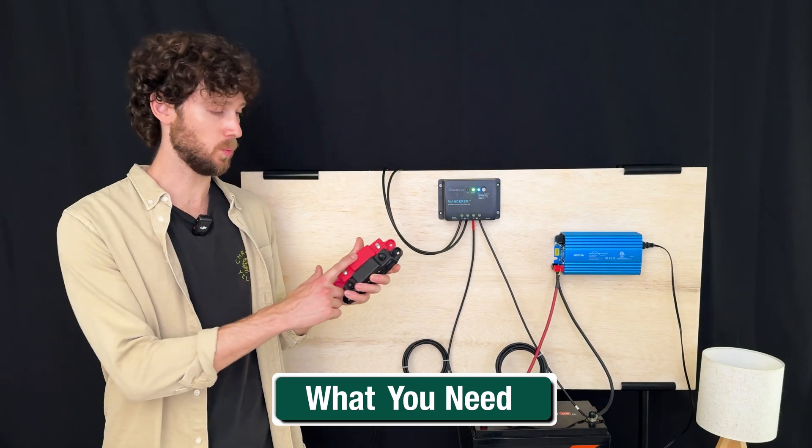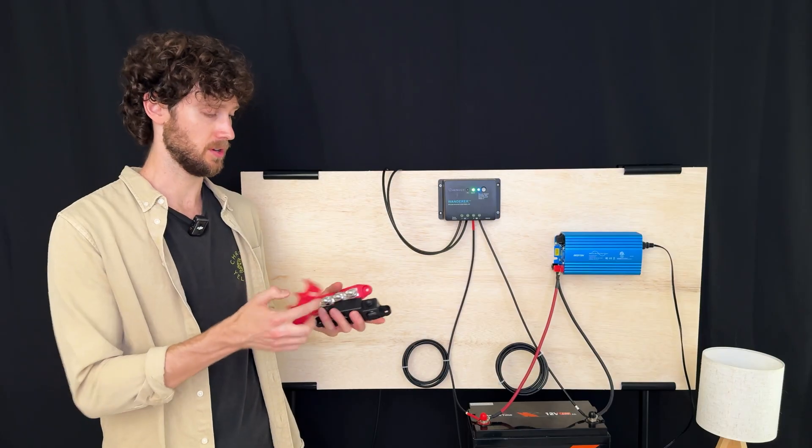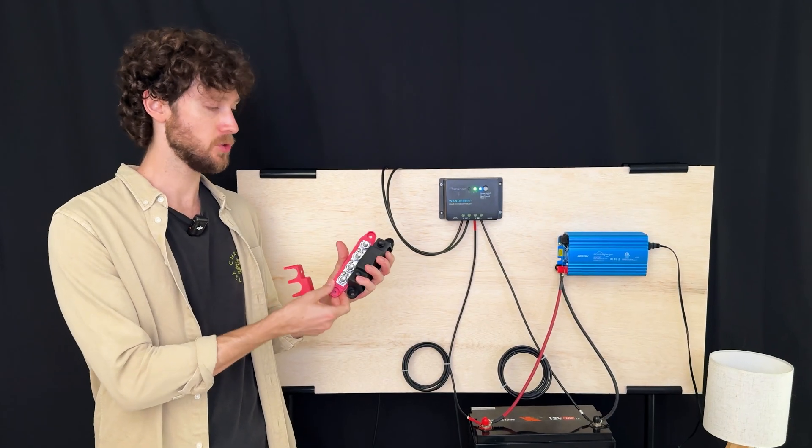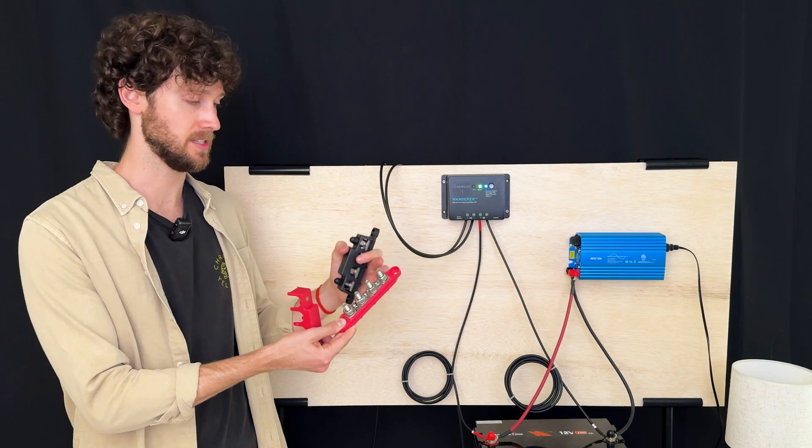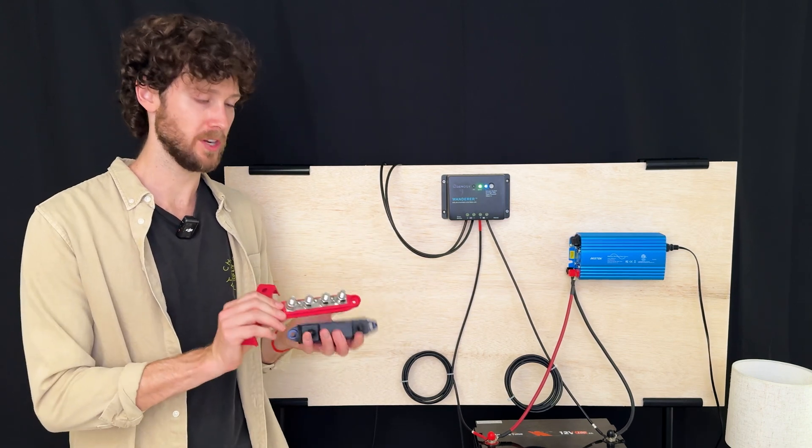You'll need two bus bars, ideally one red and one black. And these have four posts, which are also called studs. You can get a larger one if you want, so you can connect even more devices. You can get six, eight, ten, twelve, whatever you want. And when you're picking bus bars, just size them for how much current is going to be running through your system.